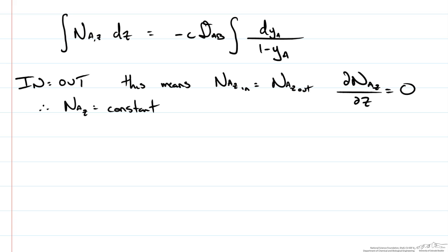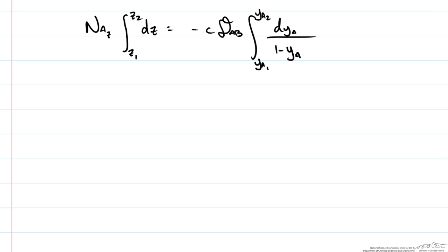That means for this left side of our integral we can bring it out. Now we can evaluate this from Z1 to Z2, and therefore mole fraction of A at position 1 and the mole fraction of A at position 2. Now we get our flux times Z2 minus Z1 is equal to negative concentration, diffusivity times the natural log of 1 minus YA2 over 1 minus YA1, since it's in the denominator we end up flipping them.